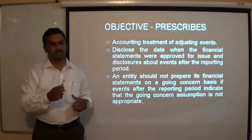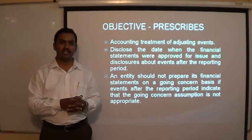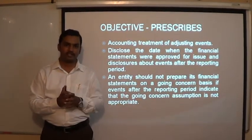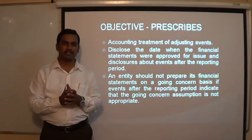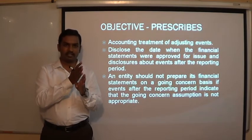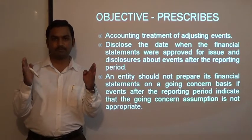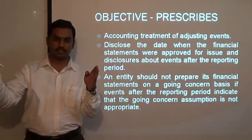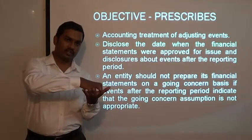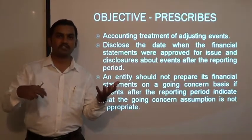The standard prescribes accounting treatment for adjusting events — that means an event occurs after the balance sheet date, but this event gives additional evidence and based on that evidence we adjust the values shown in the balance sheet and profit and loss account. The standard also requires disclosure of the date on which the board of directors approved the financial statements, and we also have to describe who approved the financial statements. We are also required to give disclosures relating to events occurring after the balance sheet date.